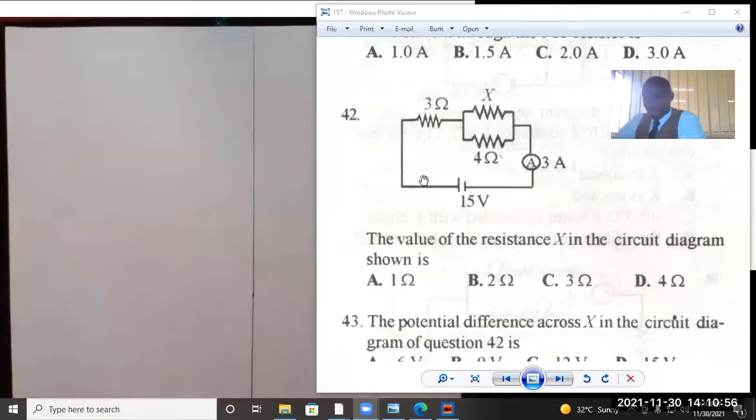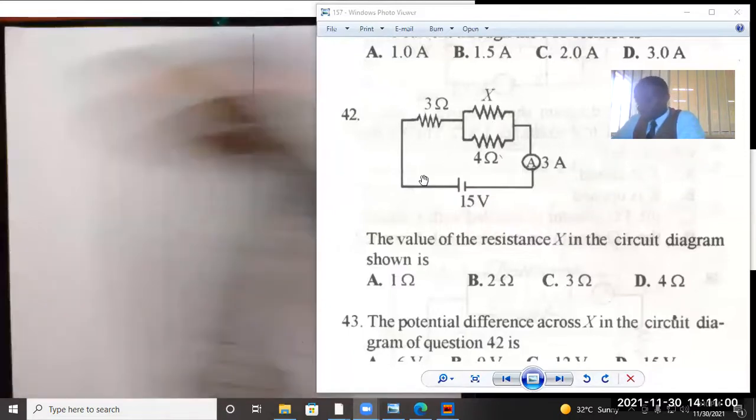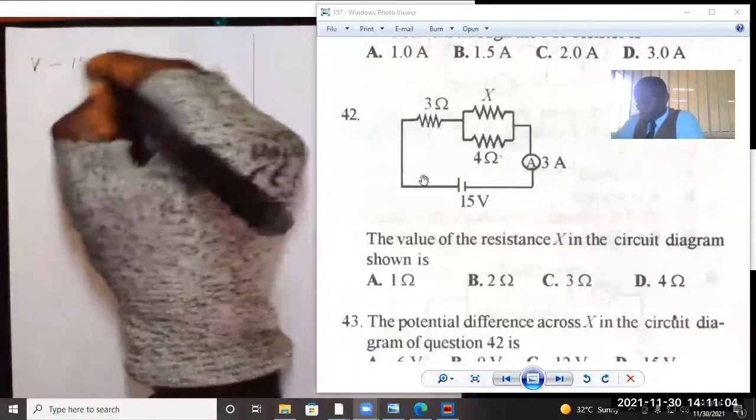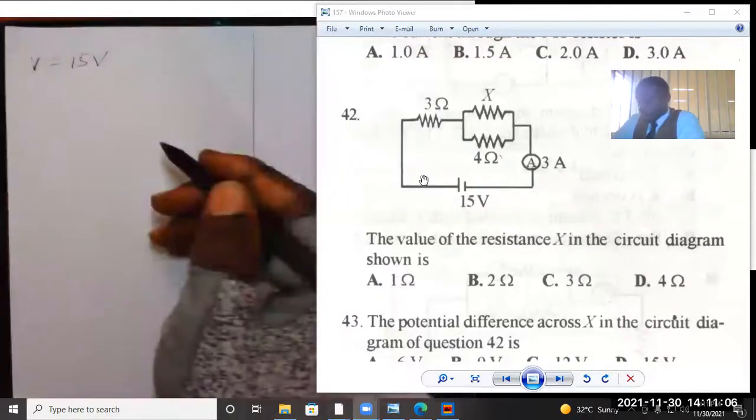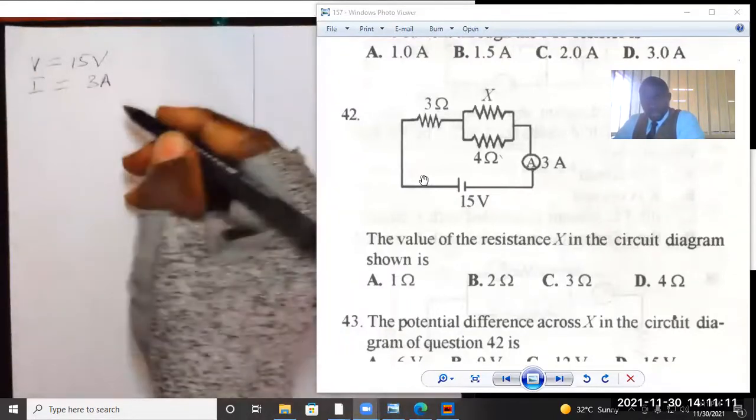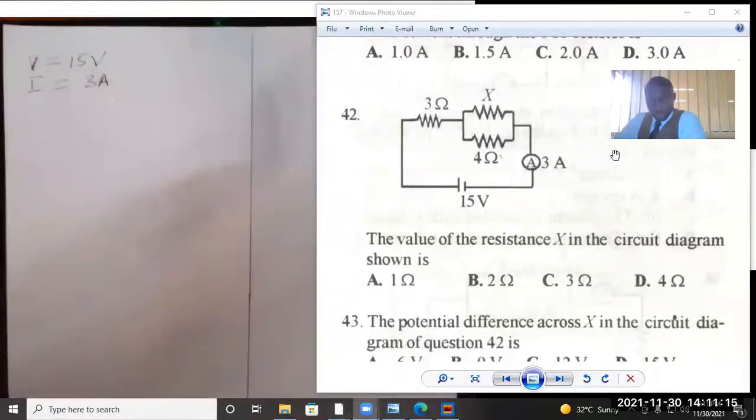The information we can get from this circuit diagram: first and foremost, V is 15 volts. The ammeter measures 3 ampere. The two resistors, resistor X and the 4 ohm resistor in parallel, so we have to reduce that to become one resistor.